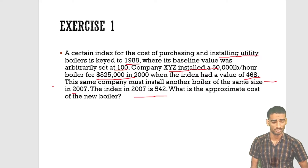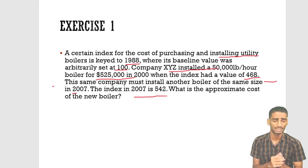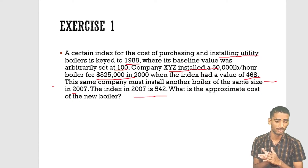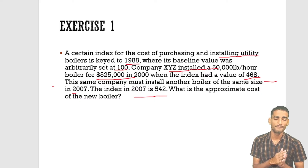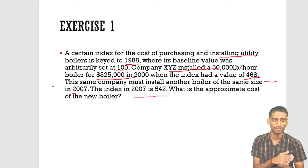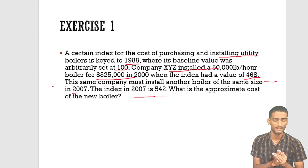The same company must install another boiler of the same size in 2007, and the index in 2007 is 542. So the question asks: what is the approximate cost of the new boiler? We are mixing two important cost estimation models here.